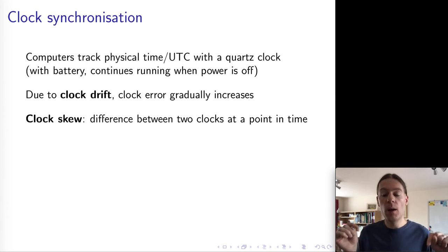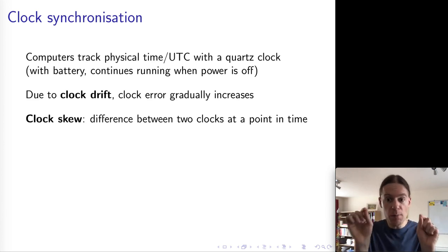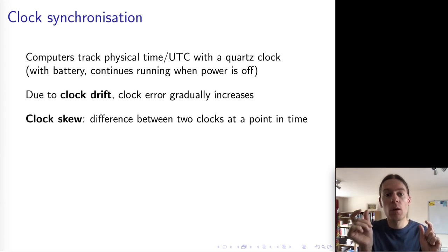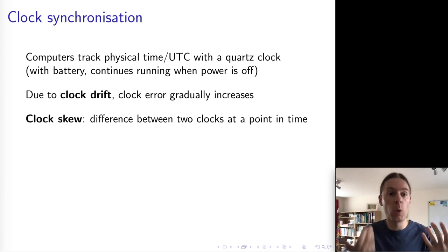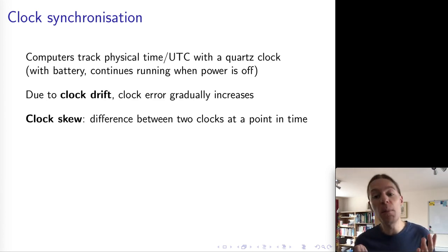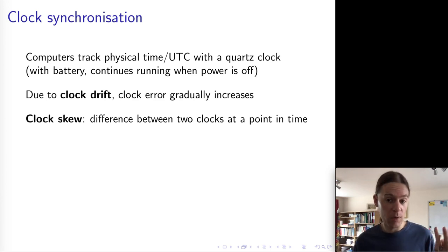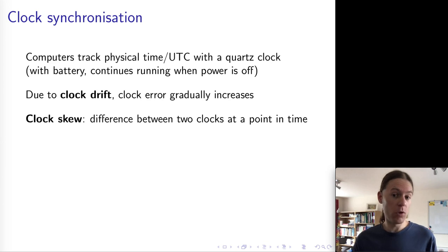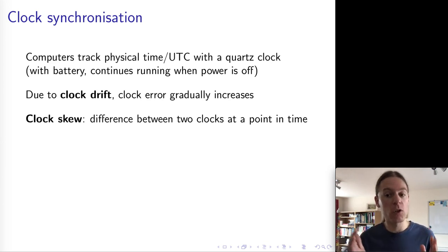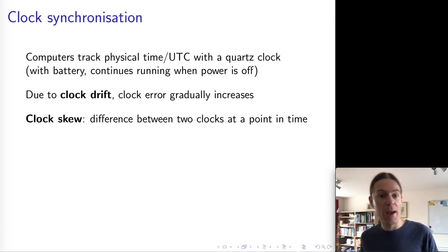Clock skew is when we look at two different clocks at the same instant in time and compare the timestamps from those clocks — clock skew is the difference between those two. What we want to do with clock synchronization is minimize the skew as much as possible. In asynchronous or partially synchronous networks it is not possible to reduce clock skew to zero; the best we can do is reduce it as much as we can, but there's always going to be some error tolerance remaining.